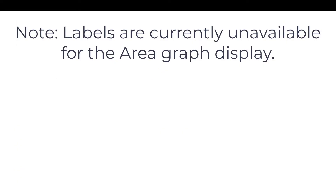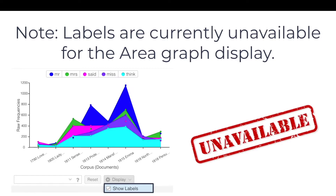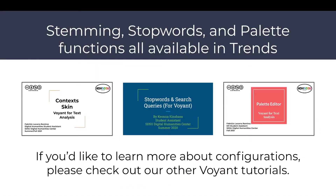Labels are currently unavailable for the area graph display. Stemming, stop word, and palette editing functions are all available in Trends. If you'd like to learn more about these configurations, please check out our other Voyant tutorials.